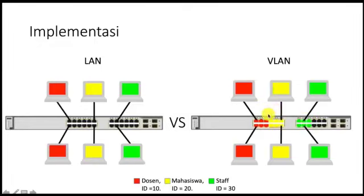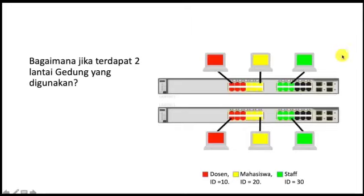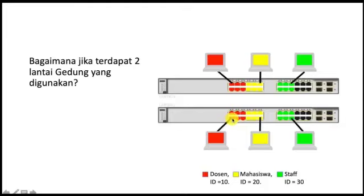Dengan begini sudah terpisah. Bagaimana kalau misalkan terdapat dua atau lebih gedung yang digunakan? Kalau kita menggunakan konsep yang sama, untuk lantai satu kita berikan VLAN ID yang dipisah menjadi tiga: VLAN ID 10 untuk dosen, VLAN ID 20 mahasiswa, VLAN ID 30 staff. Sehingga kalau dosen ada di lantai satu, maka dosen akan masuk ke dalam port dengan nomor warna merah atau ID 10.